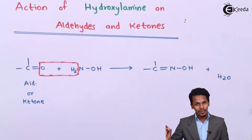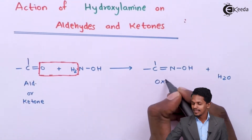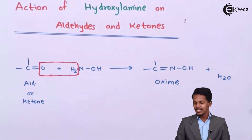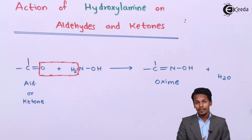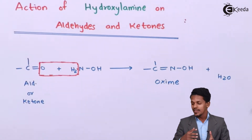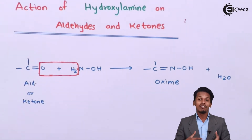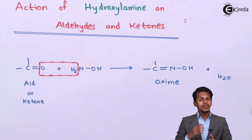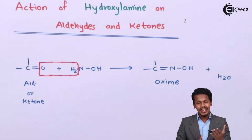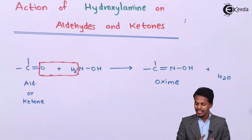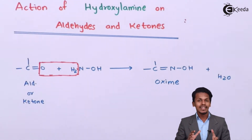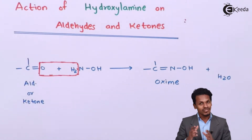The main product formed is an oxime. This oxime can be obtained from either an aldehyde or a ketone, but it would have a different name. If it is formed from an aldehyde, it is called an aldoxime. If it is obtained from a ketone, it is called a ketoxime. Let me now explain examples related to this general reaction.